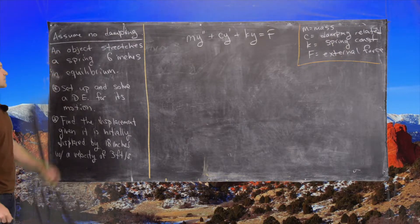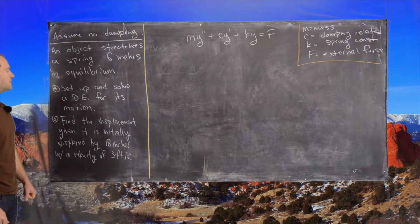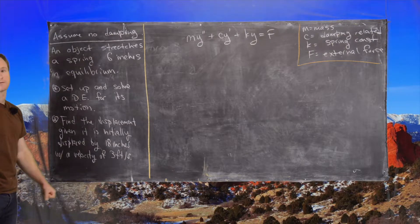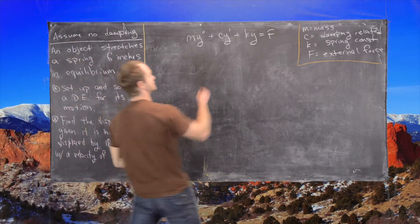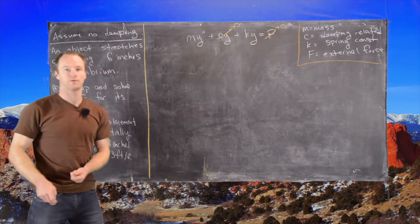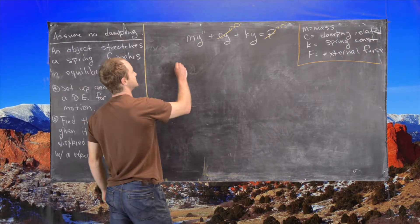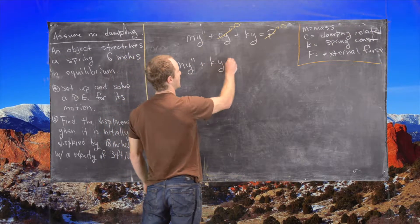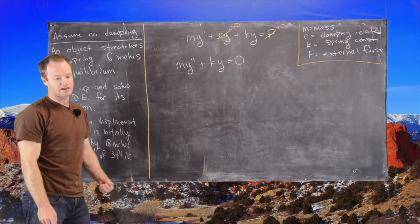So an object stretches a spring six inches in equilibrium, so we're not given the mass, but we do see that there's nothing about an external force. So that means we can get rid of the damping component of this differential equation and we can get rid of the external force component of this differential equation. So this means m y double prime plus k y equals zero is the differential equation that we need to solve.